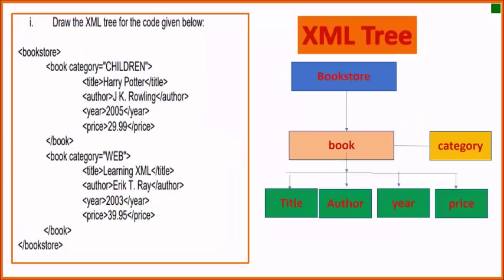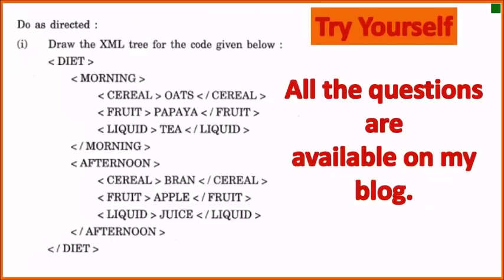One more XML tree, students. Here, attribute is also given. Now, how to show the attribute? I have already discussed these nested elements and all other things. For attribute, you have to draw a straight line and write the attribute. You can see 'Book category = Children', so I have mentioned the attribute tag in the parallel section.